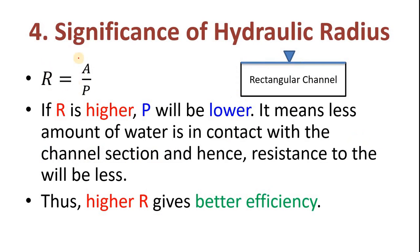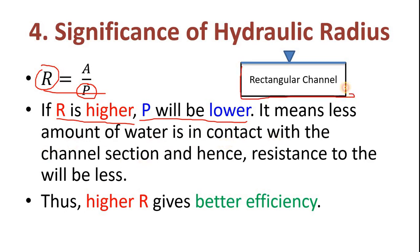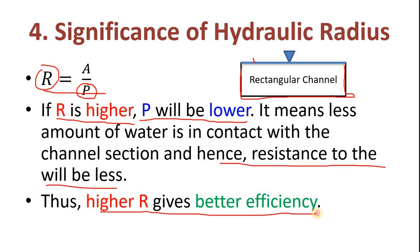Now the significance of hydraulic radius. R equals A divided by P. If R is higher, then P must be lower, meaning less water is in contact with the channel surface. This is the contact between the cross section surface and the water — the free surface is not included. So less P gives higher R, and less contact means less friction that the water faces as it flows. Resistance to flow will be less, thus higher R gives better efficiency.